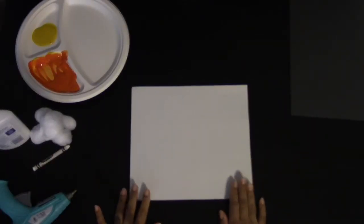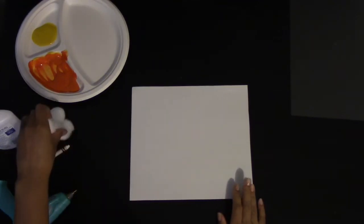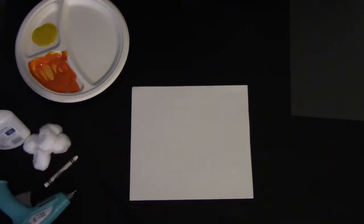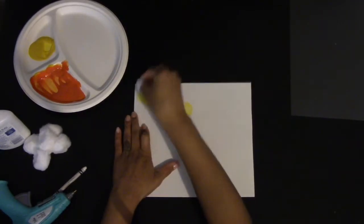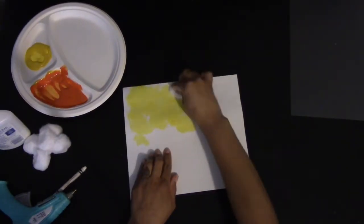First we're going to start with our white sheet of paper and begin working on the horizon. Take a cotton ball, dip it into the yellow paint and go ahead and paint the top of your paper. You're going to do the top half of this.